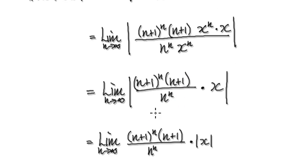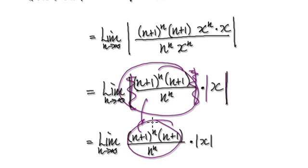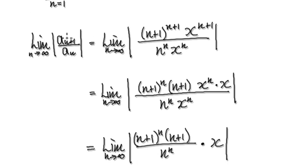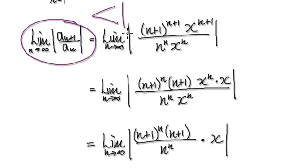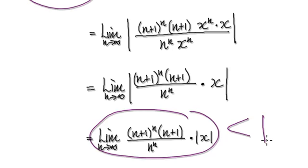Because n is always positive — n is always moving from one to infinity — n is always positive, so we don't really need the absolute sign here. This whole thing will then become this. Now, in order for our series to converge, we require this to be less than one — meaning we require this whole expression to be less than one in order for the power series to converge.